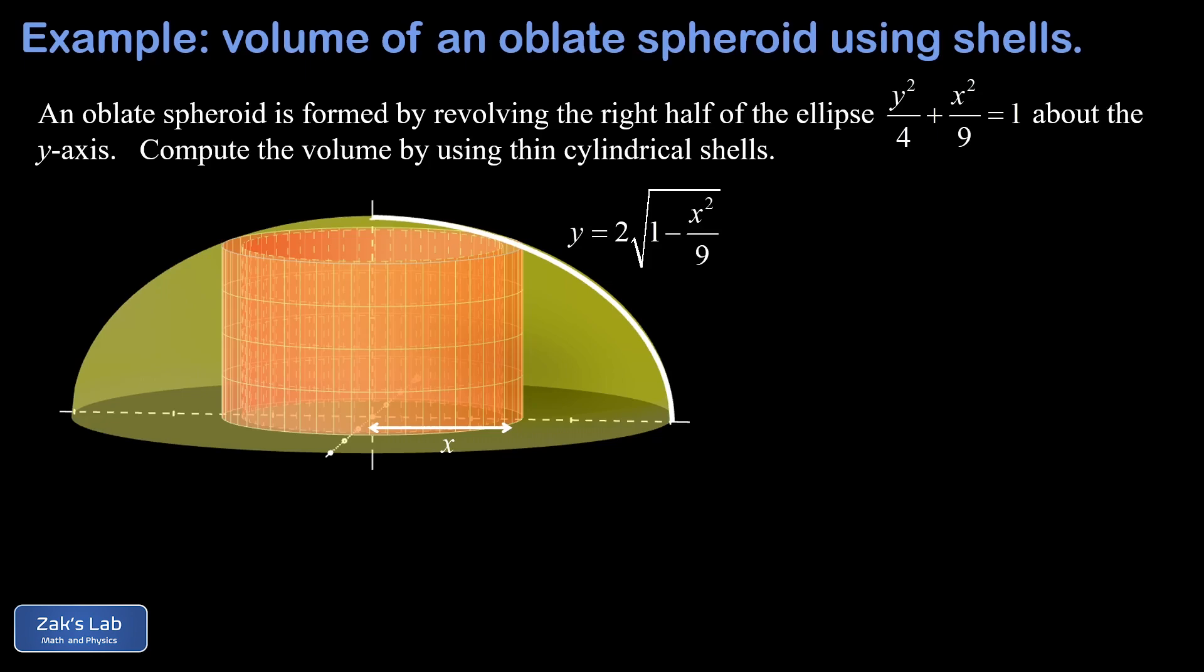Now let's go ahead and label the height of this shell, and that height is just going to be the y value on that curve describing this ellipse in the first quadrant. So it's 2 square root 1 minus x squared over 9. Finally we're going to label the thickness of the shell wall, and that thickness is an infinitesimal value that we're going to call dx.